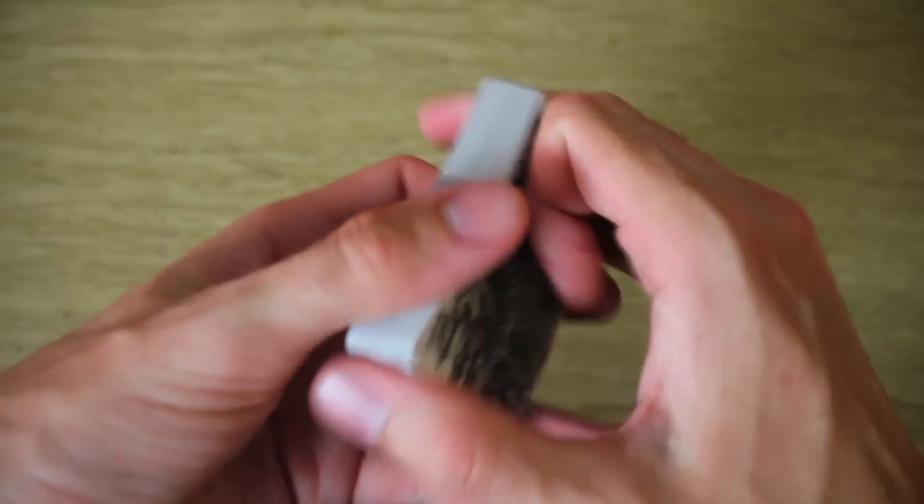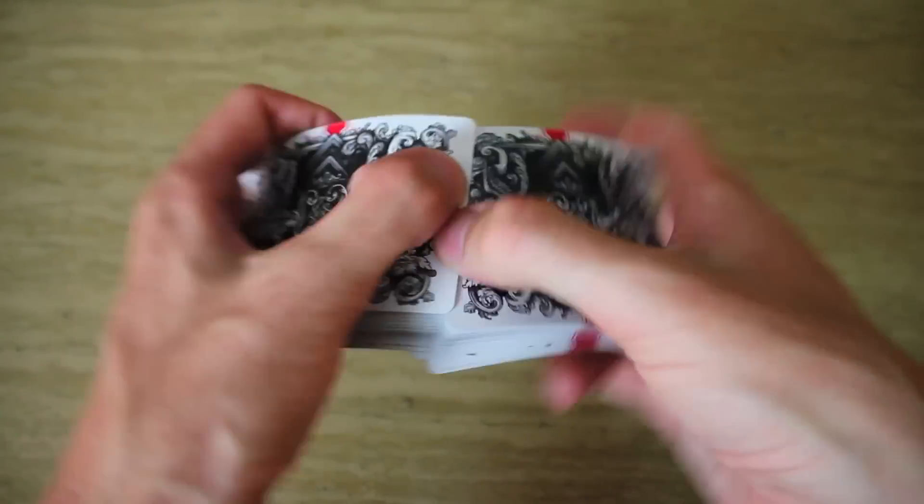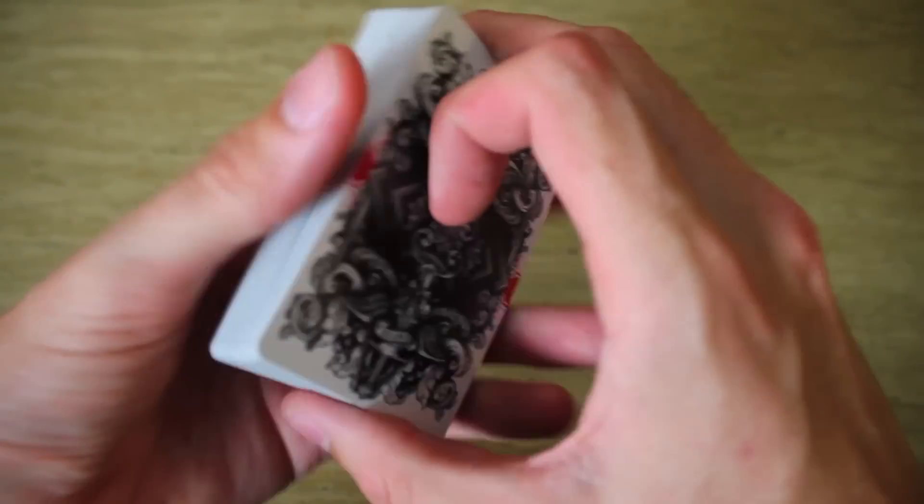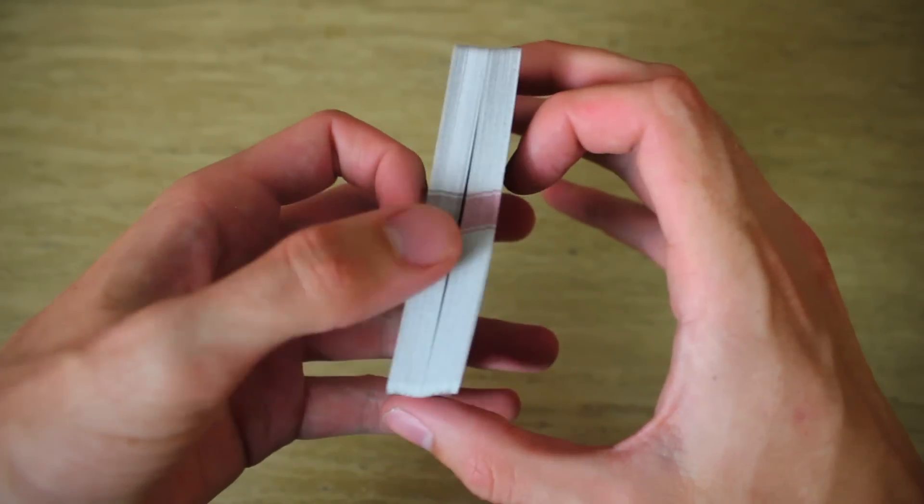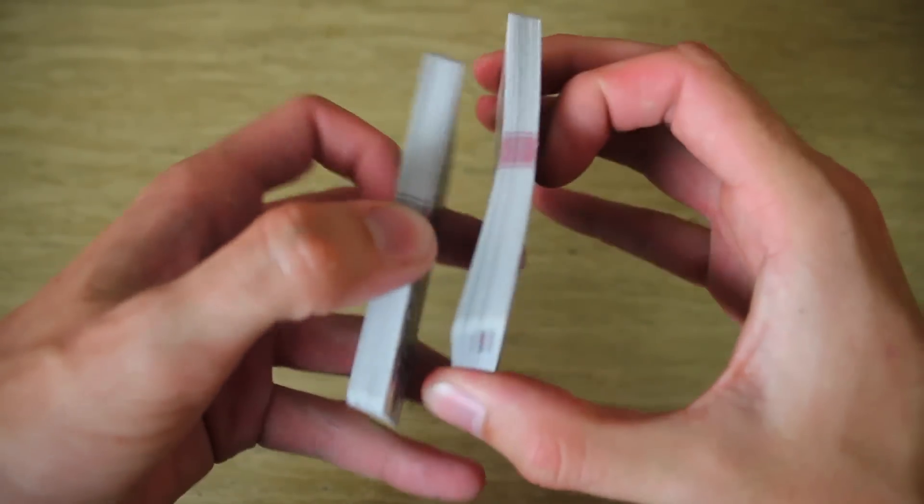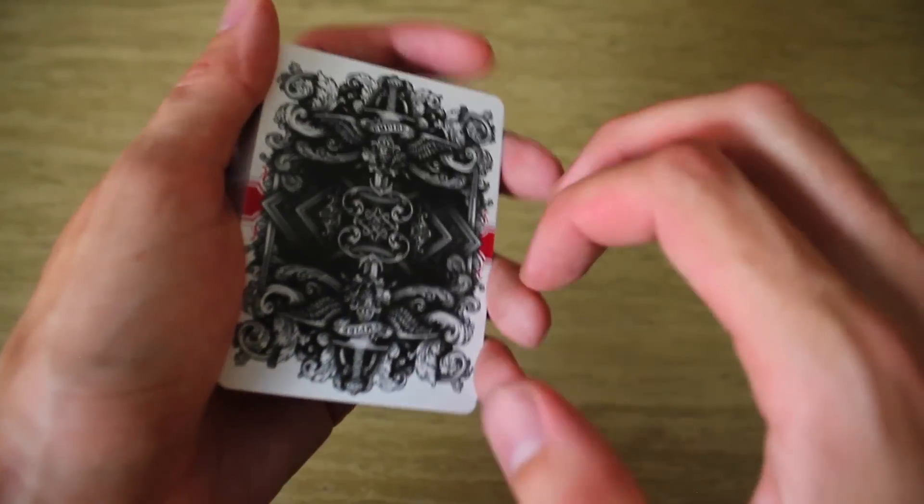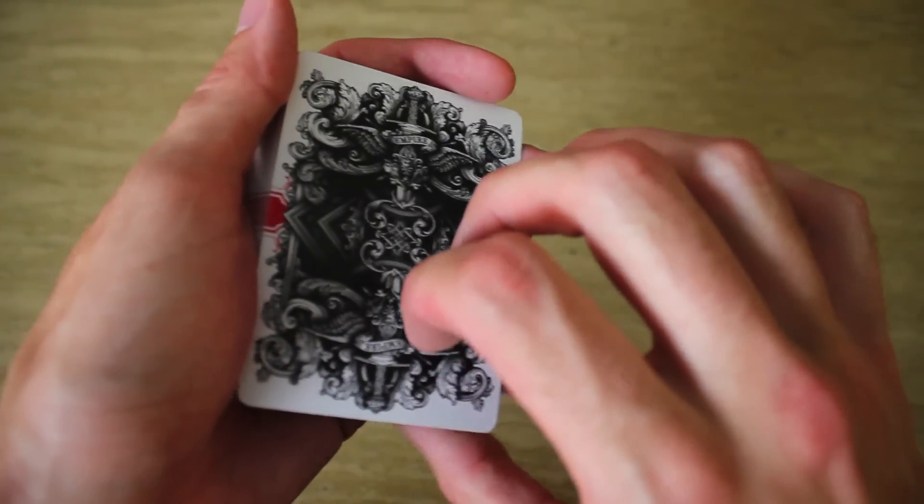you could do some false cuts or perhaps some false shuffles even, so long as the deck remains in the same order. All the reds are on top, all the blacks are below. The way you want to start this effect, and again, watch the performance by David Blaine, I'm just kind of going through the mechanics of how it works.